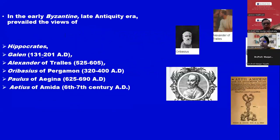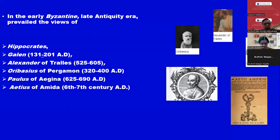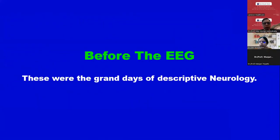Then comes this big age and big people. In the early Byzantine, late antiquity area, prevailed the views of Hippocrates, Galen — we know the vein of Galen — Alexander of Tralles, Oribasius of Pergamon, Paulus of Aegina, Aetius of Amida. These were the people who made a lot of contribution towards the current EEG what we know. Before the EEG, these were the grand days of descriptive neurology.